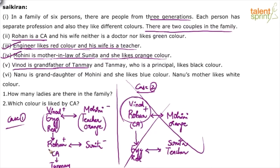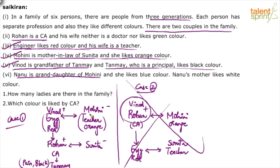The second generation is Rohan and Sunita. Parameters found so far: engineer likes red color, wife is teacher, Rohan is CA (color not yet known), Sunita's profession and color not yet known. Tanmay is in the third generation — the principal who likes black color.